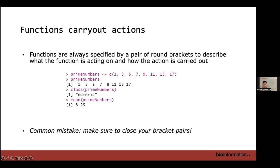As a review: the assignment arrow stores the value on the right into the object on the left. C stands for combine — we combine all numbers separated by commas into the object called prime_numbers. It doesn't give output because we're just storing a value. Afterwards, calling the prime_numbers object returns a list of all the stored values.